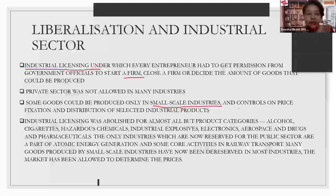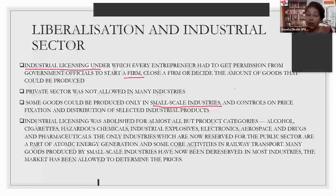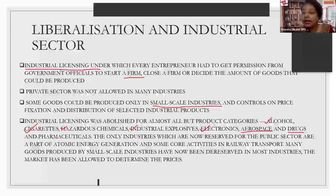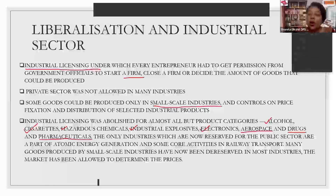As mentioned in the first point, the license was abolished, but not for all products. It continued for some products — specifically health and life related products which could challenge life and health. These included: alcohol, cigarettes, hazardous chemicals, industrial explosives, electronics, aerospace, and drug pharmaceuticals. All these industries associated with the life and security of the people remained under the license process. Other than these seven industries, all others were free from licensing.